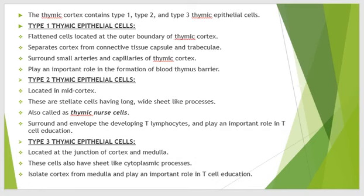Type 2 thymic epithelial cells are located in the middle part of the cortex. These are stellate cells with long, wide sheet-like processes and are also called thymic nurse cells, because they surround and envelop the developing T lymphocytes and play an important role in T cell education. Type 3 thymic epithelial cells are located at the junction of the cortex and medulla. These cells also have sheet-like cytoplasmic processes and isolate the cortex from the medulla, playing an important role in T cell education.